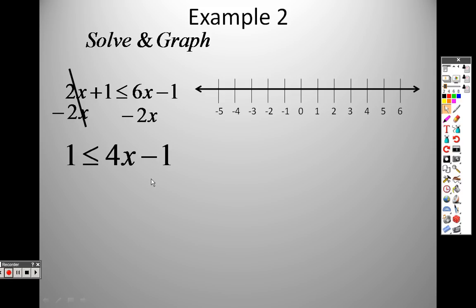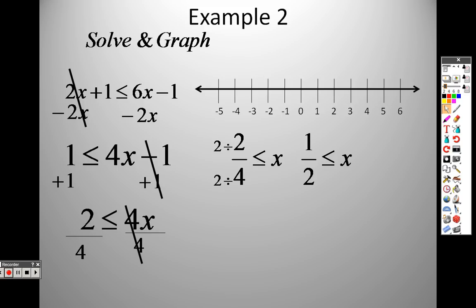So now I need to combine my numbers together. So I add 1 to both sides. So by doing that, the 1s cancel out. I get 2 is less than or equal to 4 times x. So since it's 4 times x, I have to divide both sides by 4. And when I do that, I end up with 2 over 4 is less than or equal to x. And 2 over 4, I can divide both the top and the bottom by 2 to get 1 half.